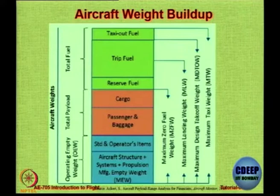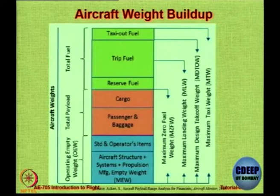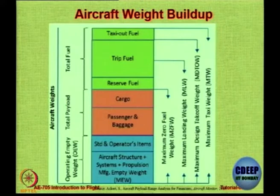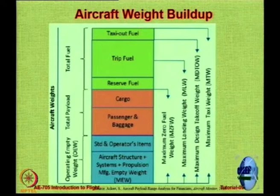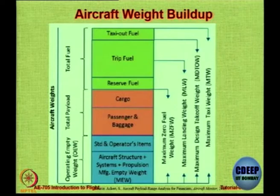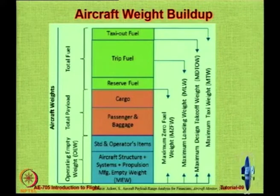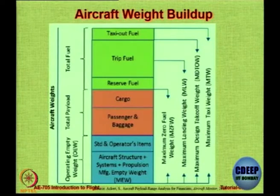The manufacturer does not always make engines — they normally buy engines from the engine manufacturer, along with seats and other equipment. So operating empty weight consists of what the aircraft company makes plus the standard and operating items that must be on the aircraft without which you will not be allowed to operate. There is no fuel and no payload at this stage. Then you add passengers plus baggage and cargo — the total of that is payload — and after that you add fuel: first compulsory reserve fuel, then trip fuel (the flight from one airport to the other), and taxi-out fuel, which together form the mission fuel.